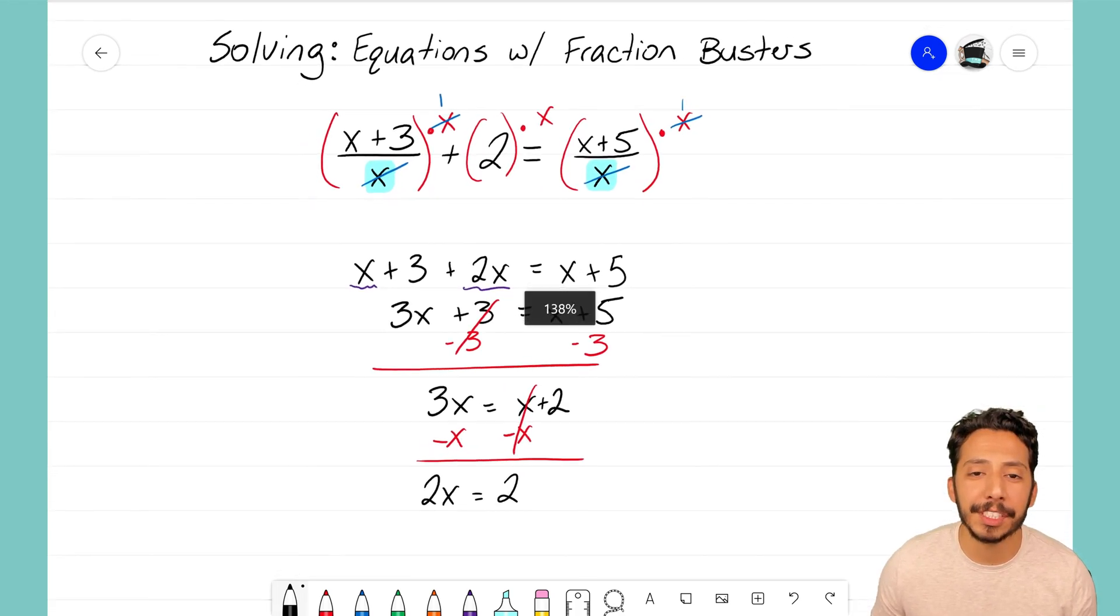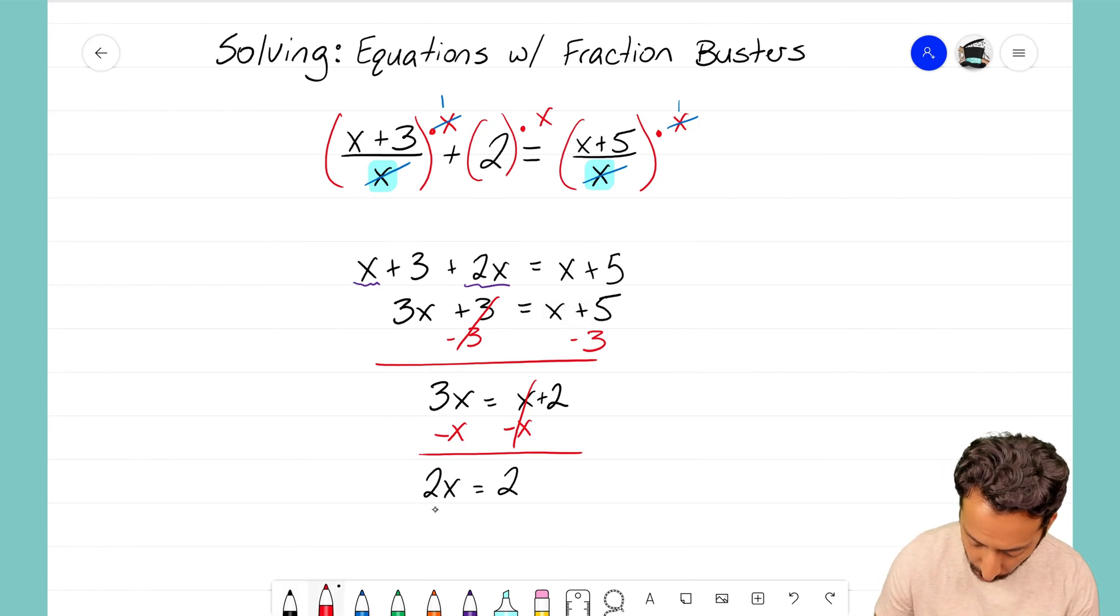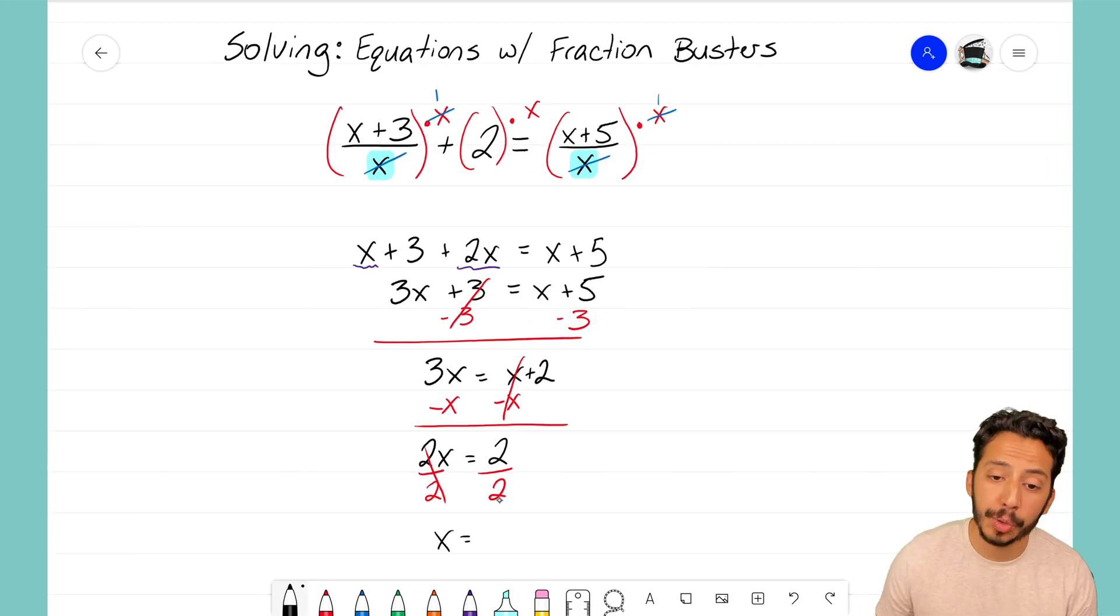We are almost there. The very last step we have to do is to divide by the coefficient of 2. If we do that we'll see that x ends up equaling 2 divided by 2, which is just 1.